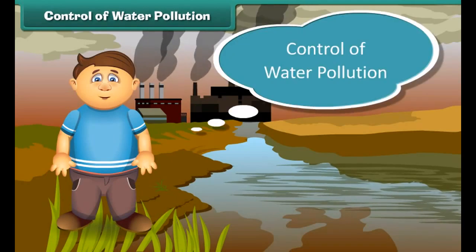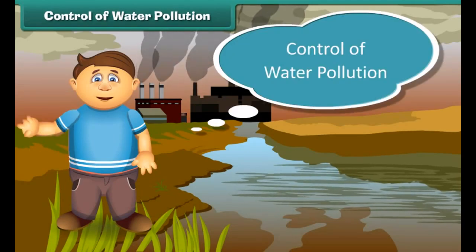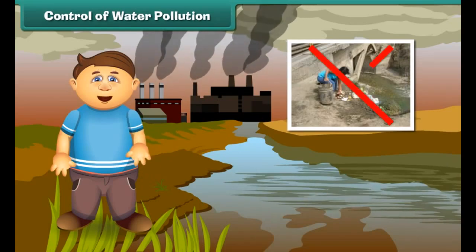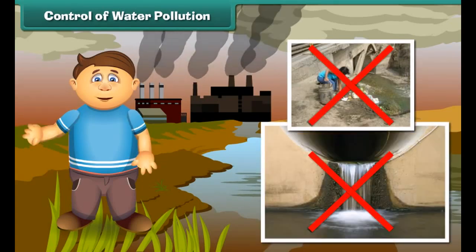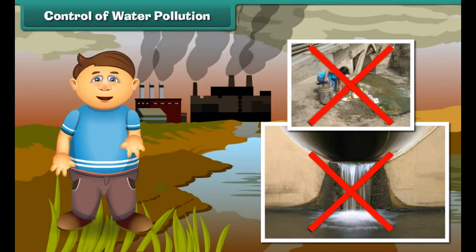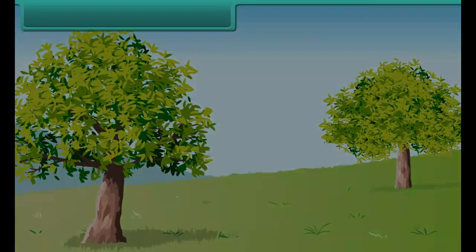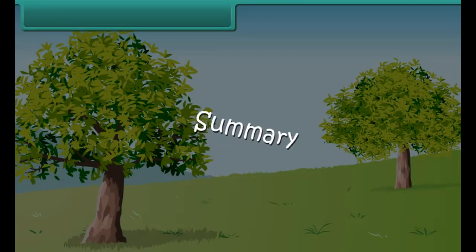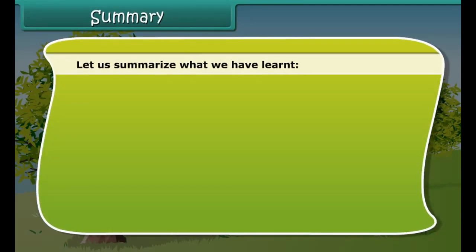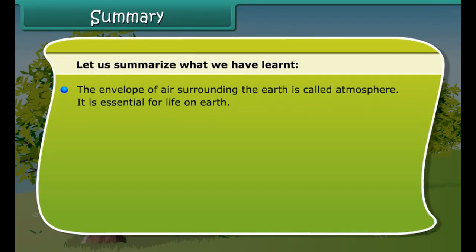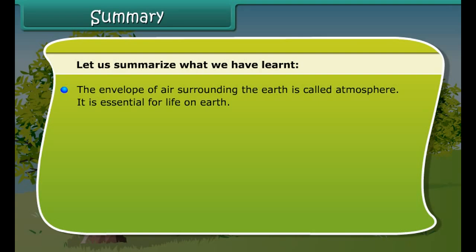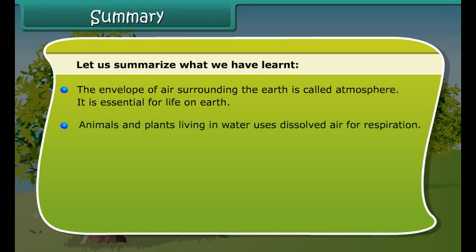Let us summarize what we have learned: The envelope of air surrounding the Earth is called the atmosphere, and it is essential for life on Earth. Animals and plants living in water use dissolved air for respiration. Animals living in soil use trapped air in it for respiration. Air pollution is the contamination of the atmosphere by harmful gases and particulates, and it can be reduced by taking a few simple measures.